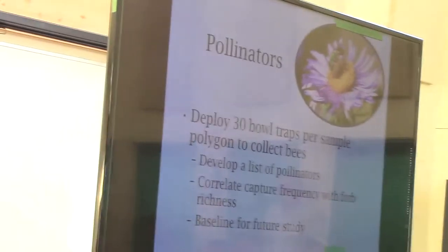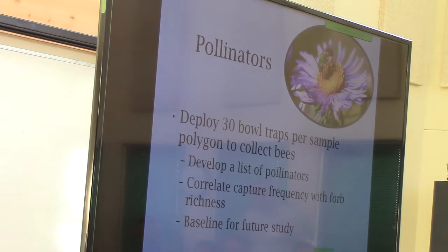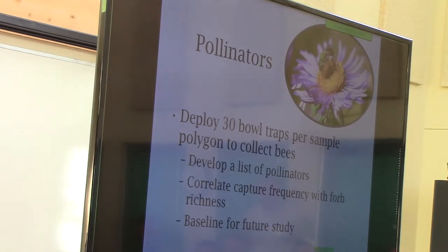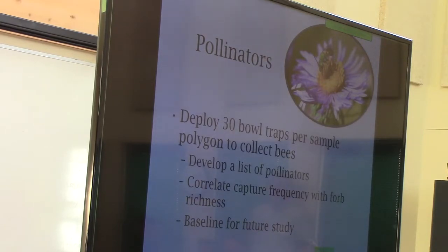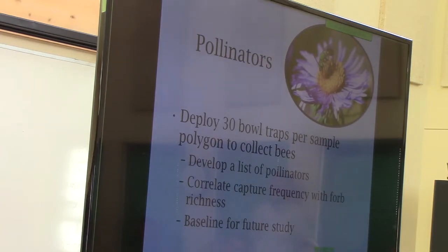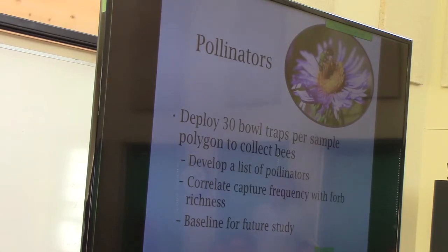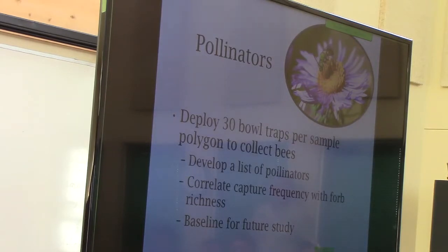We are also trying to look at pollinators — those samples are still in the freezer and haven't been pinned yet. We deployed 30 bowl traps per sample polygon to collect bees, which were out during the day the crew was sampling at each site. From this we can at least develop a list of pollinator-friendly species, and perhaps if we're lucky correlate capture frequency with forb richness. That analysis will be pretty sketchy and I don't expect it to be hugely useful, but what's really going to be valuable is that you'll have a baseline for a future study — a starting point of what we find.